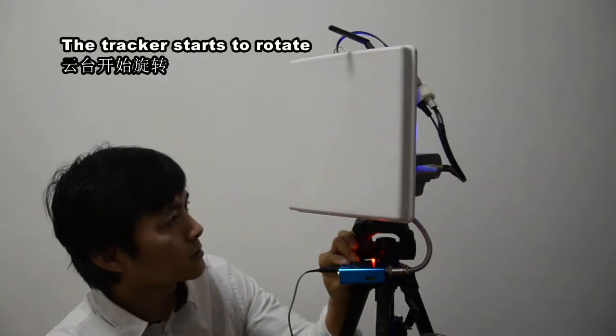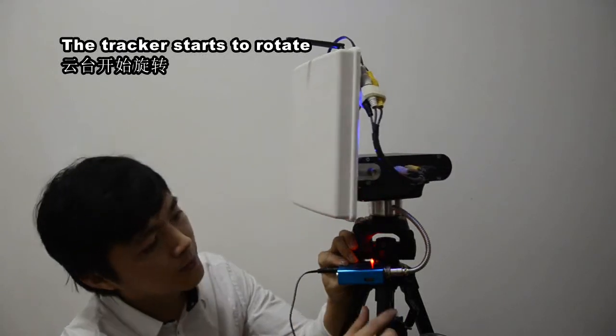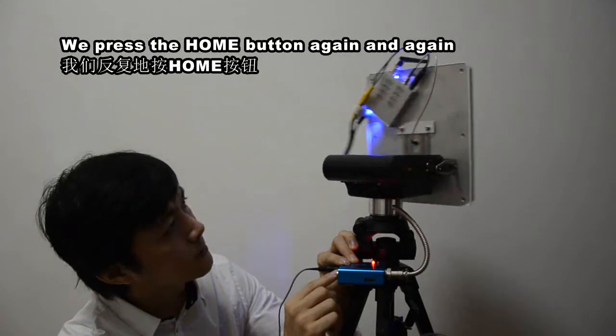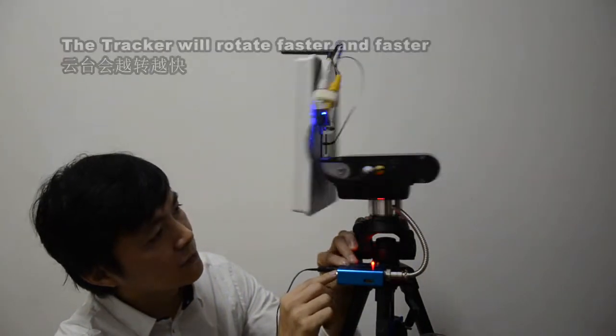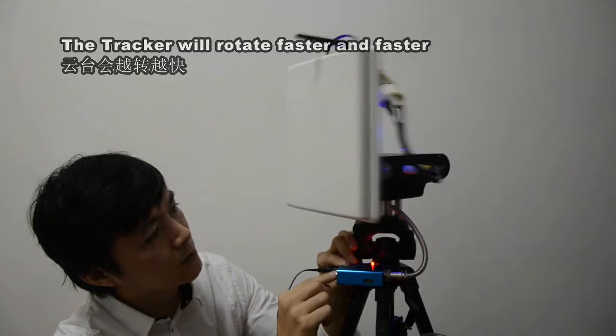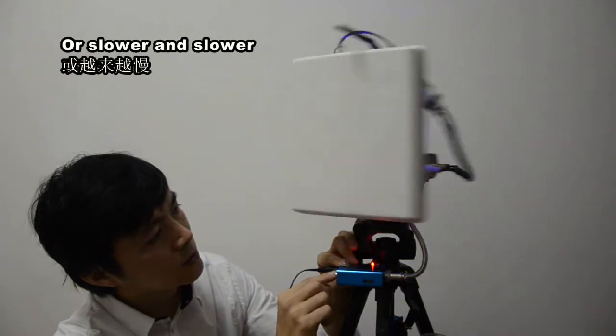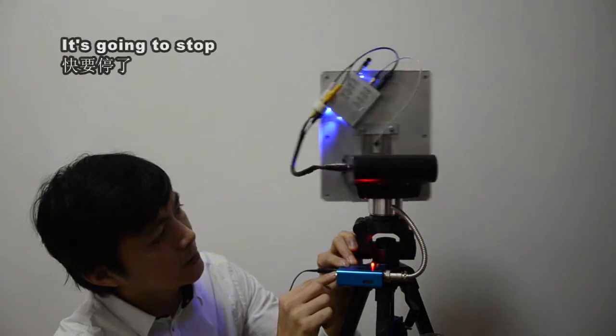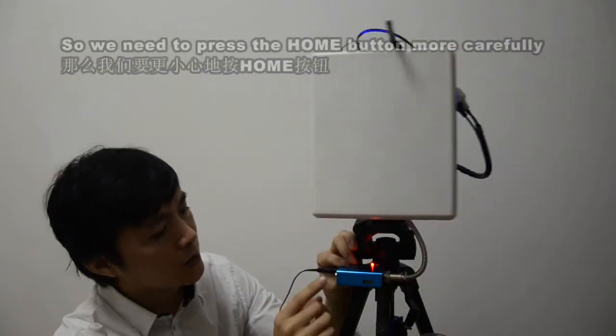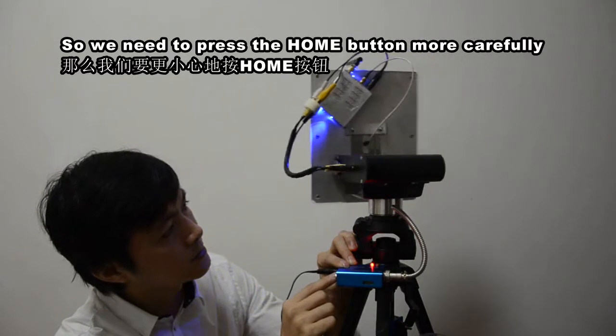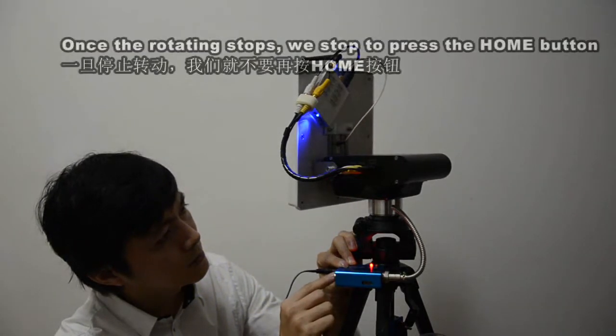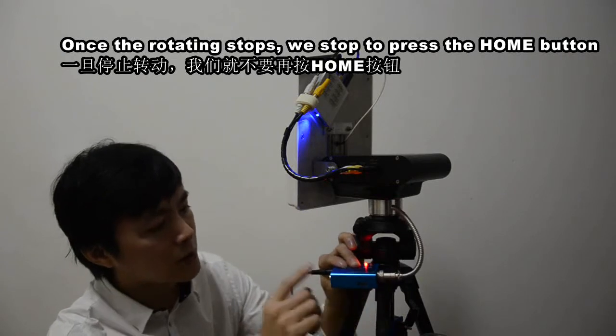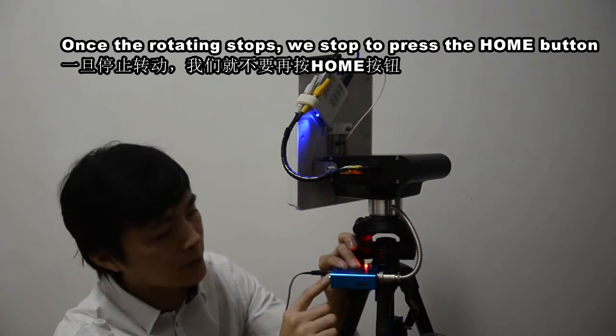The tracker starts to rotate. We press the home button again and again. The tracker will rotate faster and faster, or slower and slower. Slow down. It is going to stop, so we need to press the home button more carefully. Once the rotating stops, we stop pressing the home button.